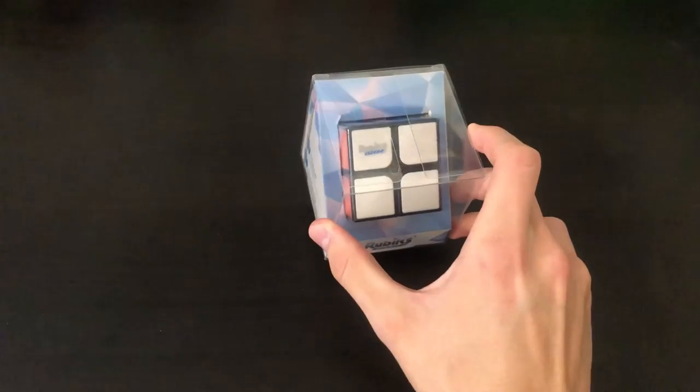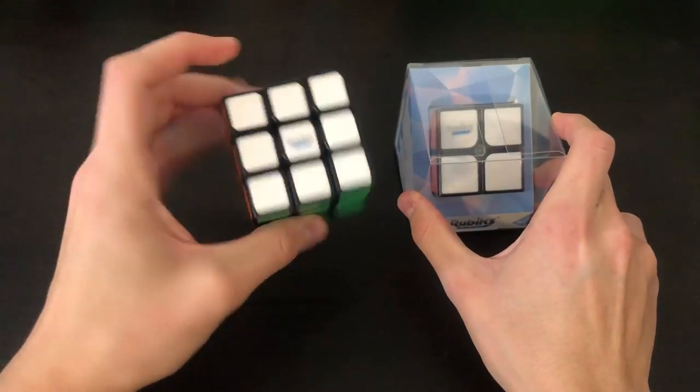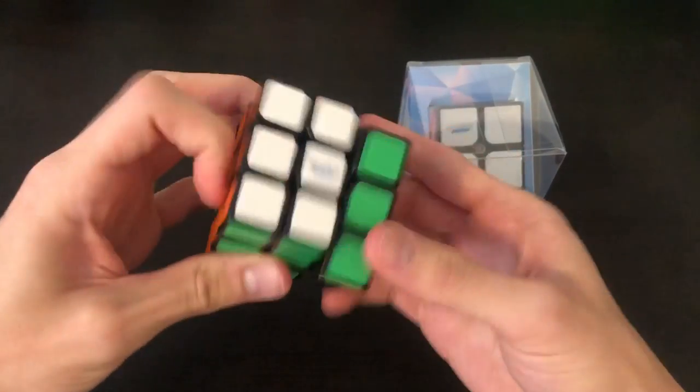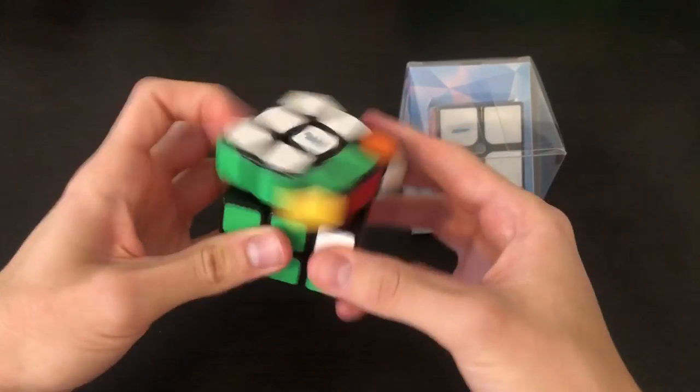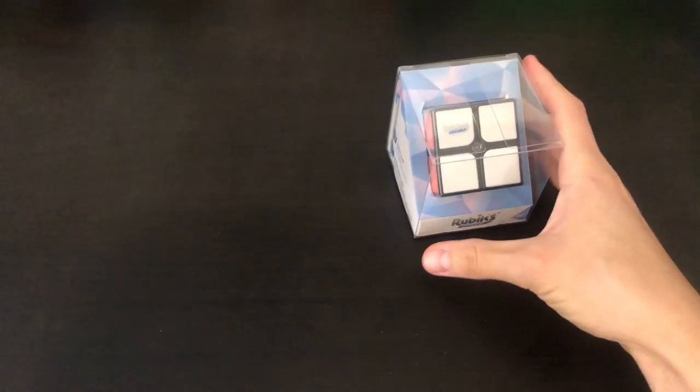Now recently they came out with a Rubik's SpeedCube 3x3. I believe they partnered with GAN. And here this is with tiles. It's very smooth, very quiet. And so I'm very interested to see what the feeling of this 2x2 is like.